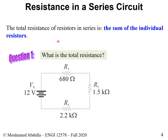In a series circuit with different resistors connected — a source, wires as the path, and resistors R1, R2, R3 all connected in series with just one loop — we might ask: what is the total resistance? It turns out that in a series circuit the total resistance is simply the sum of the individual resistors. So if given a circuit, the total resistance is just R1 plus R2 plus R3. It is really straightforward.